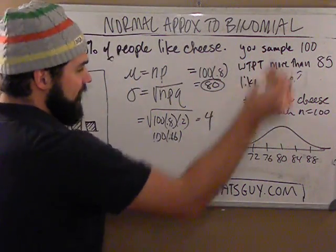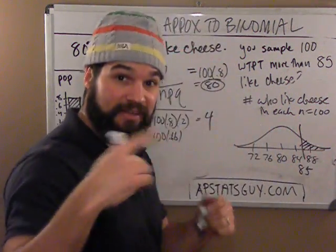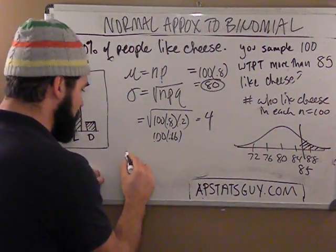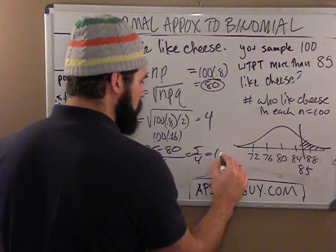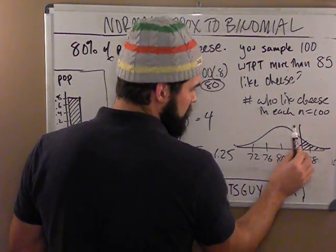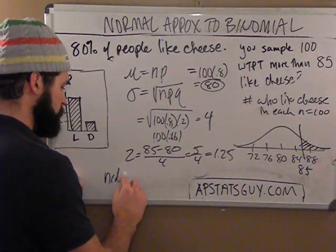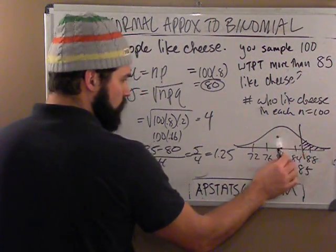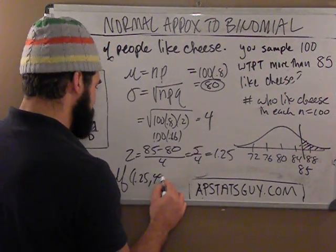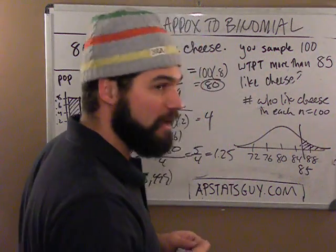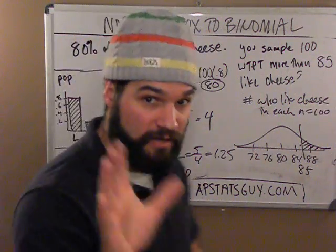So I want to find the probability of getting more than 85. Well, 85 is right up here on the curve. To find the area past this, I find a z-score and use normCDF. My z is simply 85 minus 80 over the standard deviation of 4, which is 5 over 4, which is 1.25. That's between the 16% and 2.5% tail regions, so somewhere around 10%. If I were doing normCDF, I'd go from 1.25 up to 999 and get about 10%.